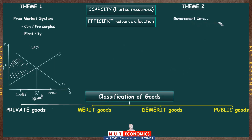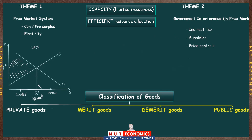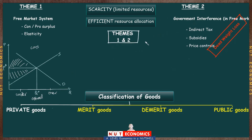Then we moved to Theme 2, where we started talking about government interferences — taxes, subsidies, and price controls — and how these disturb the free market equilibrium. In all of these tools, we highlighted how consumers and producers are usually hurt, and technically showed that these interferences create a dead weight loss, meaning society's welfare ends up being less than in the free market. So Themes 1 and 2 combined give the message that the free market succeeds in allocating resources optimally, and the government should not interfere.